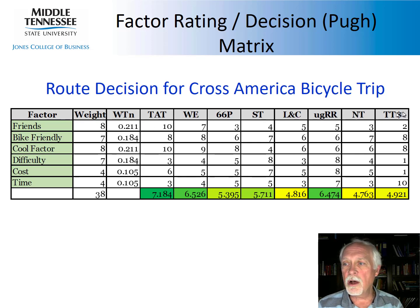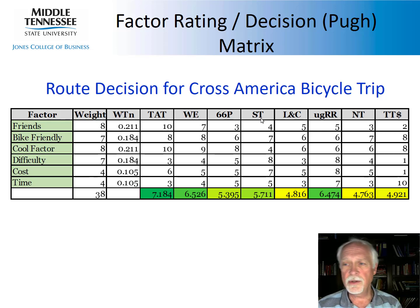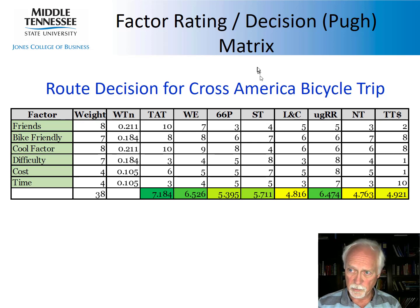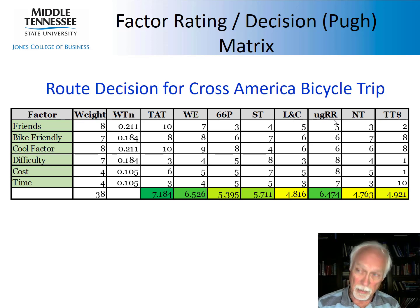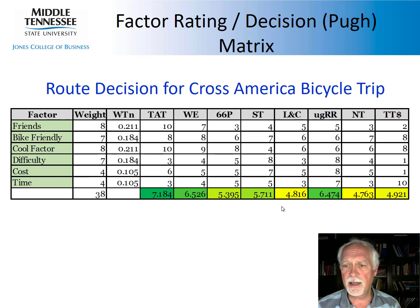Across the columns are the route alternatives: the Transamerica Trail, Western Express, Route 66 and on to Philadelphia, the Southern Tier, the Lewis and Clark route, the Underground Railroad (which runs south to north — Mobile, Alabama to near Lake Huron in Ontario), the Northern Tier, and what I believe is called Travel Trek, which I marked with a dollar sign because you have to pay for that.